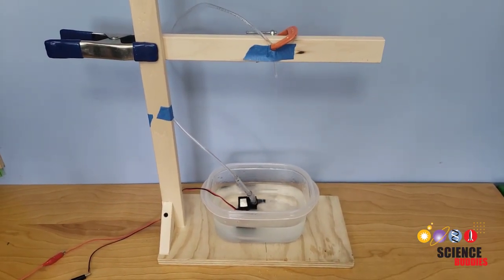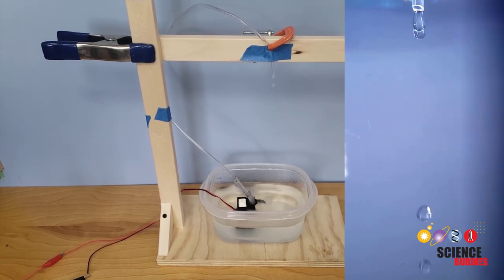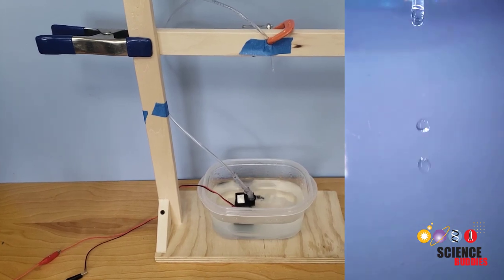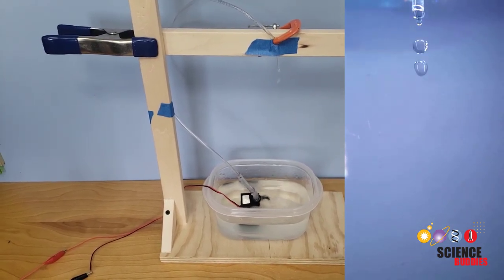For instructions on how to build your own fountain, and how you can use it for a science project by examining how the frequency of the strobe light affects the apparent motion of the water drops, check out the links in the description of this video.